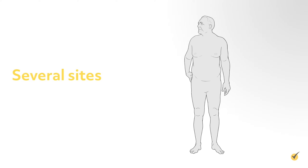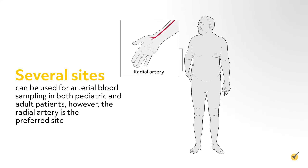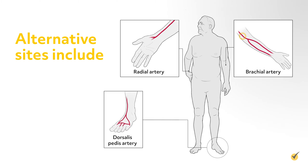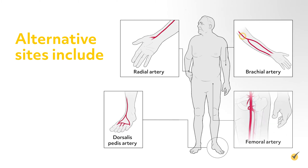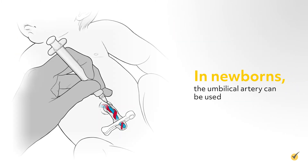Several sites can be used for arterial blood sampling in both pediatric and adult patients. However, the radial artery is the preferred site. Alternative sites include the brachial artery, the dorsalis pedis artery, and the femoral artery, with the posterior tibial artery being a less used option. In newborns, the umbilical artery can be used.